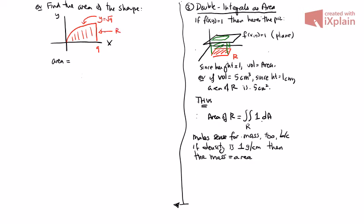What we want to do is find the area. The area, according to the rule here, is the double integral over r of 1 dA. This can be done as vertically simple. As vertically simple, this is 0 to 9, 0 to square root of x, 1 dy dx.